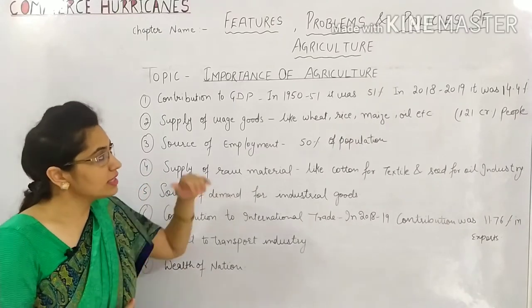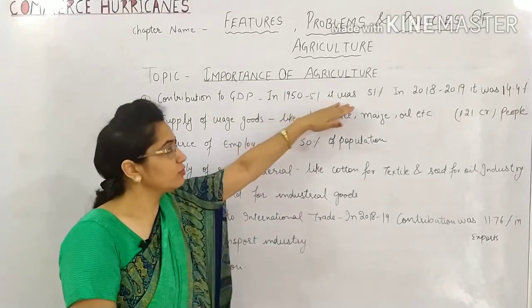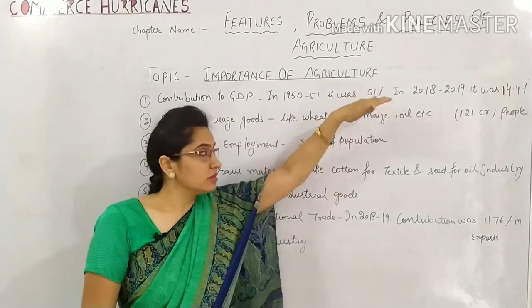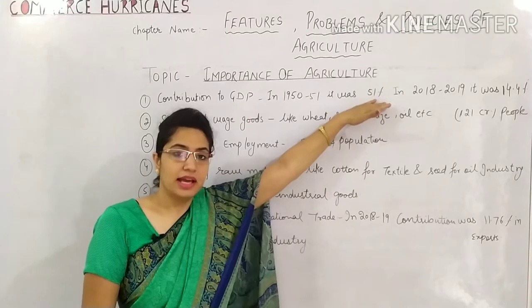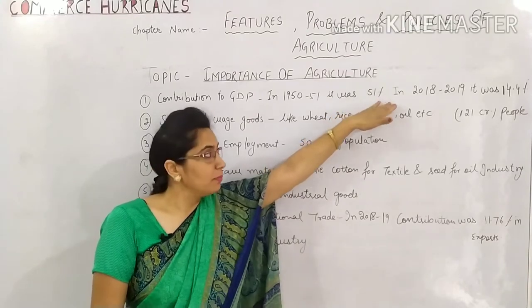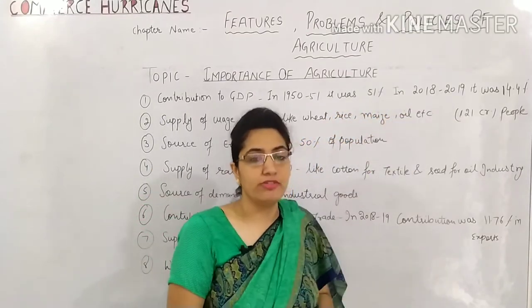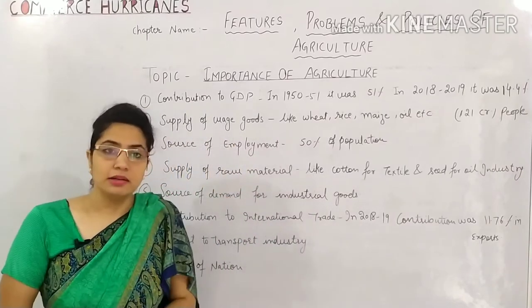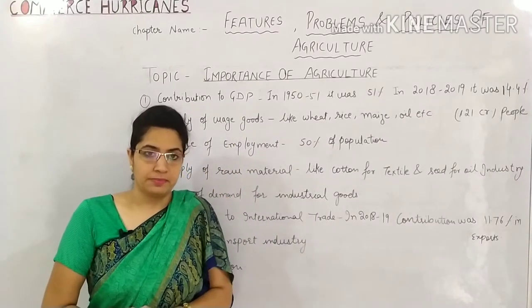As you can see, in 1951 agriculture contributed 51% to GDP. But nowadays, in 2018 and 2019, it was only 14.4%. This doesn't mean that agriculture is not important.